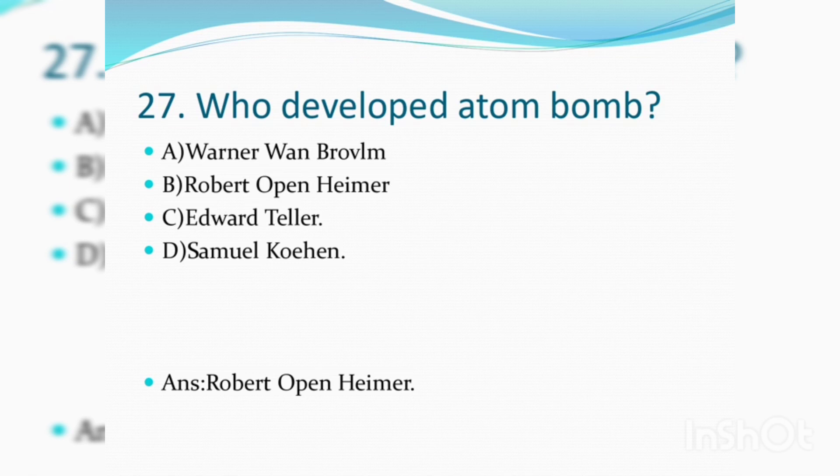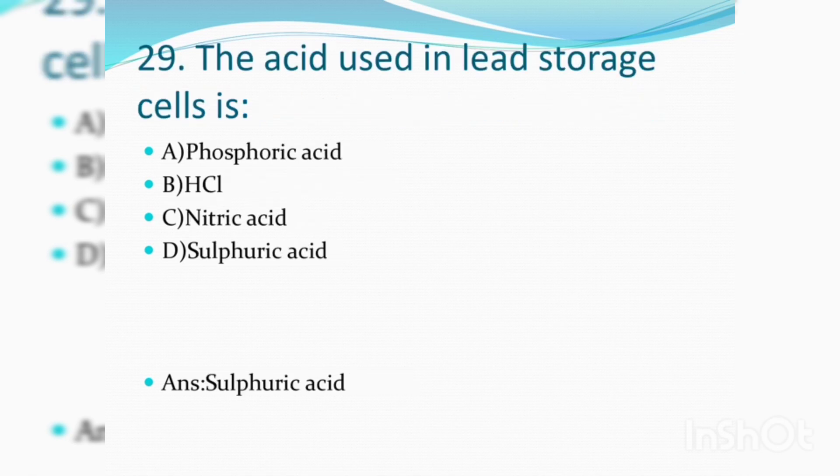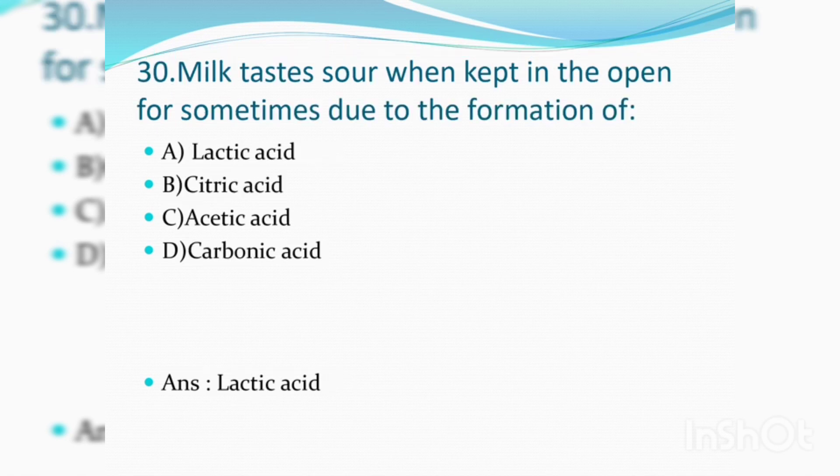Who developed an atom bomb? Option B: Robert Oppenheimer. The acid used in lead storage cell is sulfuric acid. Milk turns sour when kept in the open for some time due to the formation of lactic acid. Answer is lactic acid, Option A.